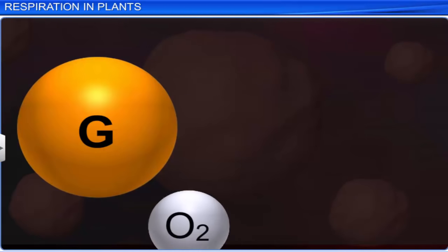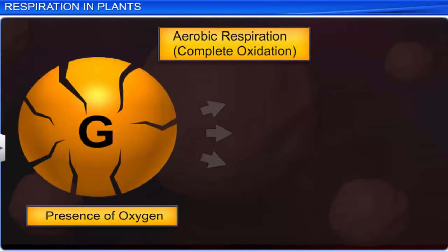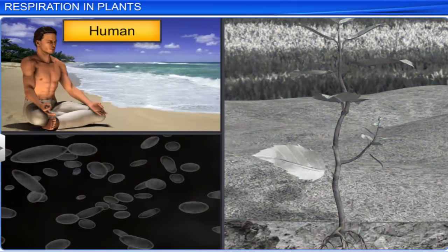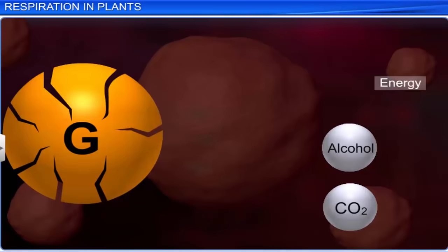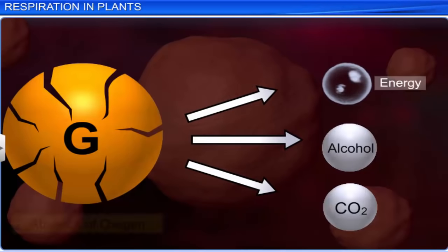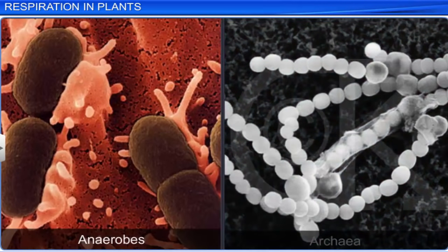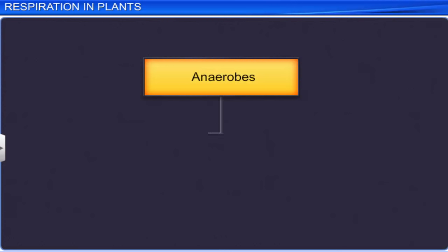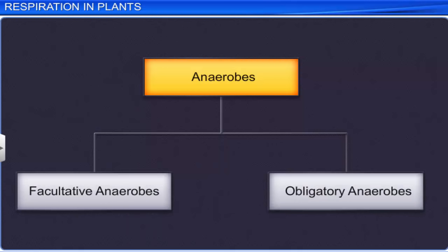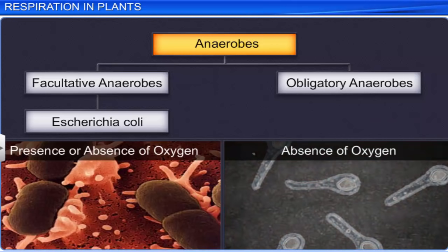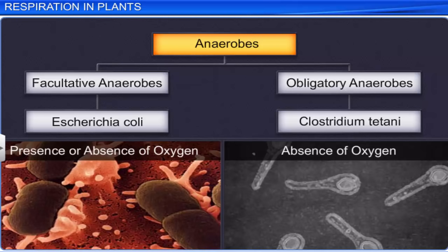When the oxidation of food substances takes place in the presence of oxygen, it is called aerobic respiration. It yields water and carbon dioxide as the byproducts. This type of respiration takes place in humans, plants, and some bacteria. When the oxidation of food substances takes place in the absence of oxygen, it is called anaerobic respiration. It yields alcohol and carbon dioxide as the byproducts. This type of respiration takes place in anaerobes and archaea. Anaerobes are divided into facultative anaerobes and obligatory anaerobes. Examples of facultative anaerobes include Escherichia coli that can survive in the presence as well as absence of oxygen. Examples of obligatory anaerobes include Clostridium tetani that survive only in the absence of oxygen.